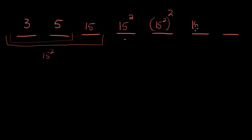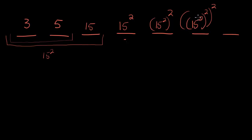Our sixth term is just going to be the term before it — which was 15 squared squared — and then this whole thing is squared. And our seventh term is going to be this whole thing squared. To save space, let's think about what that exponent would be. I'm raising 15 to an exponent, raising the whole thing to another — that means I multiply these exponents — and this is just going to be 15 raised to the 2 times 2 times 2 times 2 times 2, or 16.